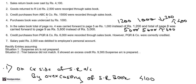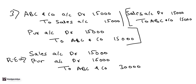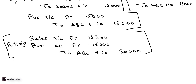Third transaction: credit purchases from ABC and Company Rs. 15,000 recorded through the sales book. Rectification entry: Sales Account Debit, Purchases Account Debit, to ABC and Company Account. This is a complete rectification entry. Because of this error, the trial balance will match, so in Situation 2 with the suspense account, the entry remains the same.